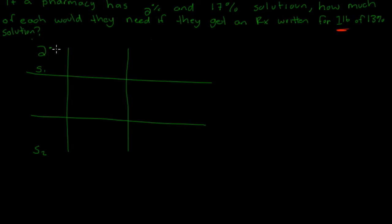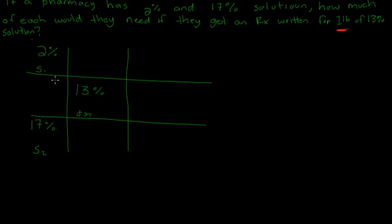The second one is going to be 17%, so you have 17%. The number that goes in the middle is going to be the desired strength total — that 13% that we see right there. So we put 13% there. Now we're going to subtract across: 2 minus 13 gives us 11, and 17 minus 13 gives us 4.